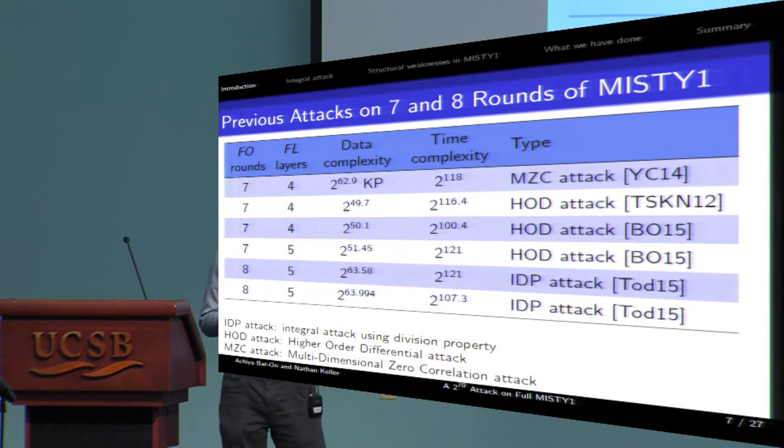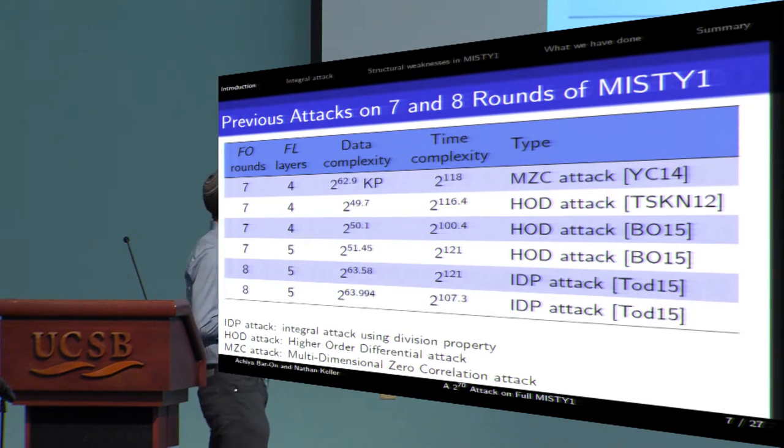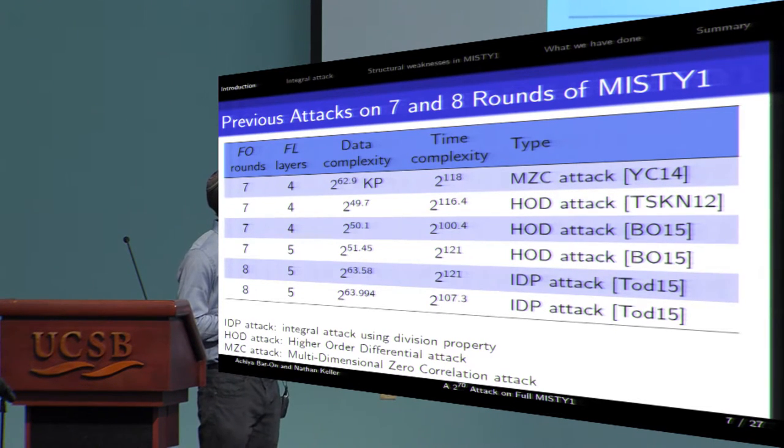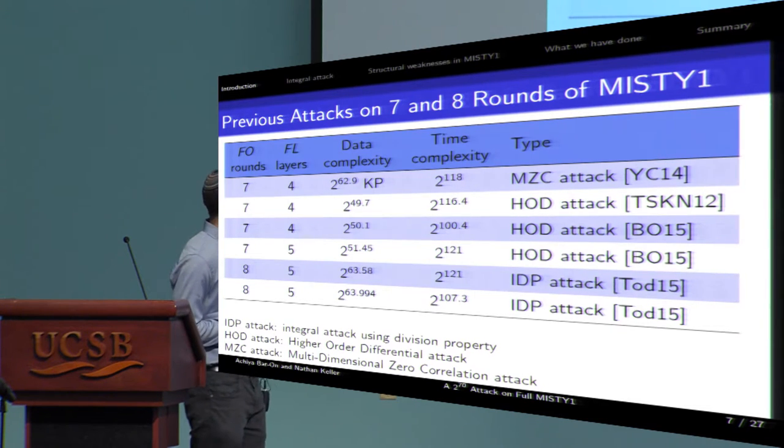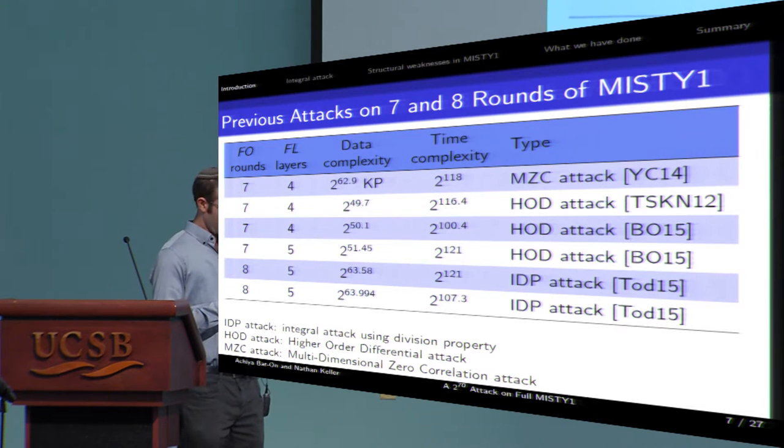Despite the complex structure, several attacks were published in the last years. In the first row, you can see attacks on reduced variant of the cipher. And in the last two rows, you can see the first attacks on the full MISTY-1 cipher, were published last year by Todo. Todo's attacks are integral attacks that use a new technique Todo invented called division property. So let's start with integral attacks.